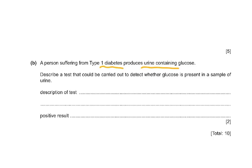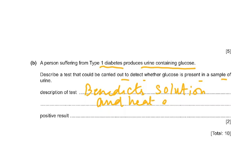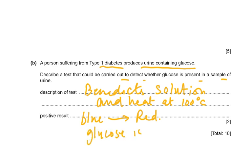A person suffering from Type 1 diabetes produces urine containing glucose. Describe a test to detect whether glucose is present in a sample of urine. You add Benedict's solution and heat it in a boiling water bath. If the color changes from blue to red — or any color blue to green, yellow, orange, or red — that is a positive result meaning glucose is present. You get two marks: one for Benedict's solution and heating, and one for the color change from blue to red or any brick-red/orange color.